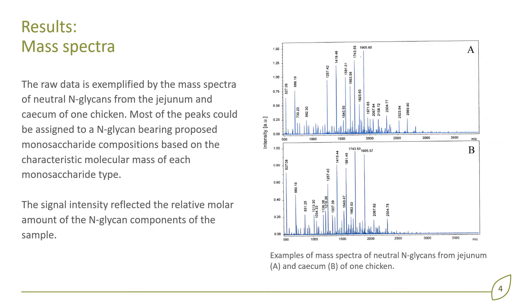This slide shows examples of the raw data of this experiment. On the right-hand side there is the mass spectra of neutral N-glycans from the jejunum and cecum of one chicken.